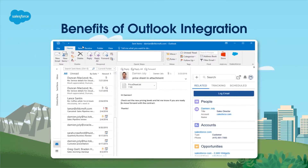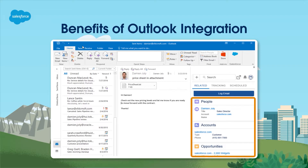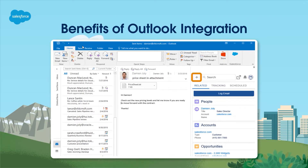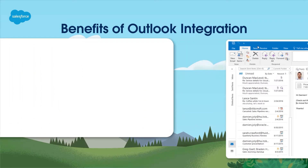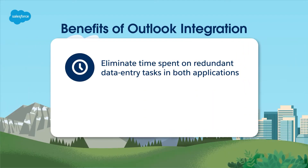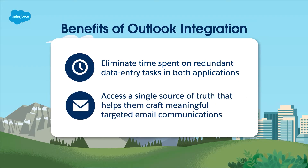The Outlook integration with Salesforce gives sales reps who use Outlook and Salesforce the best of both worlds. Instead of switching between the two applications, sales reps get a completely integrated experience — seeing matching contacts, leads, accounts, and other Salesforce records, logging emails sent from Outlook directly into Salesforce, and creating new related records right from Outlook. These capabilities allow sales reps to eliminate time spent on redundant data entry tasks in both applications, and access a single source of truth that helps them craft meaningful, targeted email communications to prospects and customers.